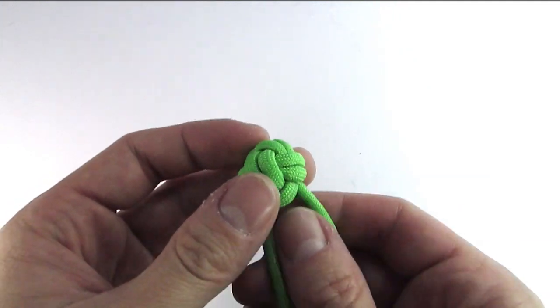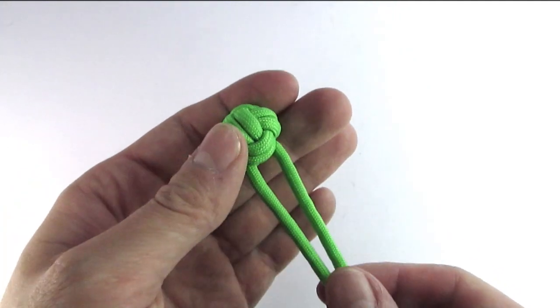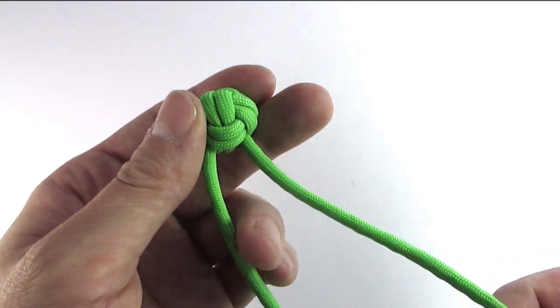Once you've done this, you get a nice looking spherical knot that looks like a monkey fist, and now we need to finish it off.